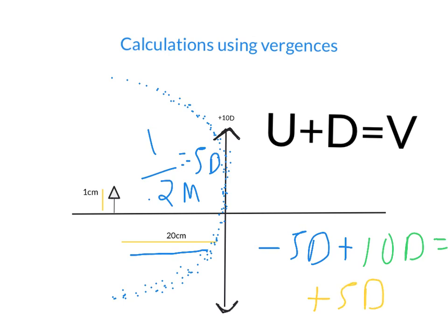So, the vergence, the wavefront that leaves the lens is positive 5 diopters. The vergence that leaves this lens, the curvature of the wavefront.